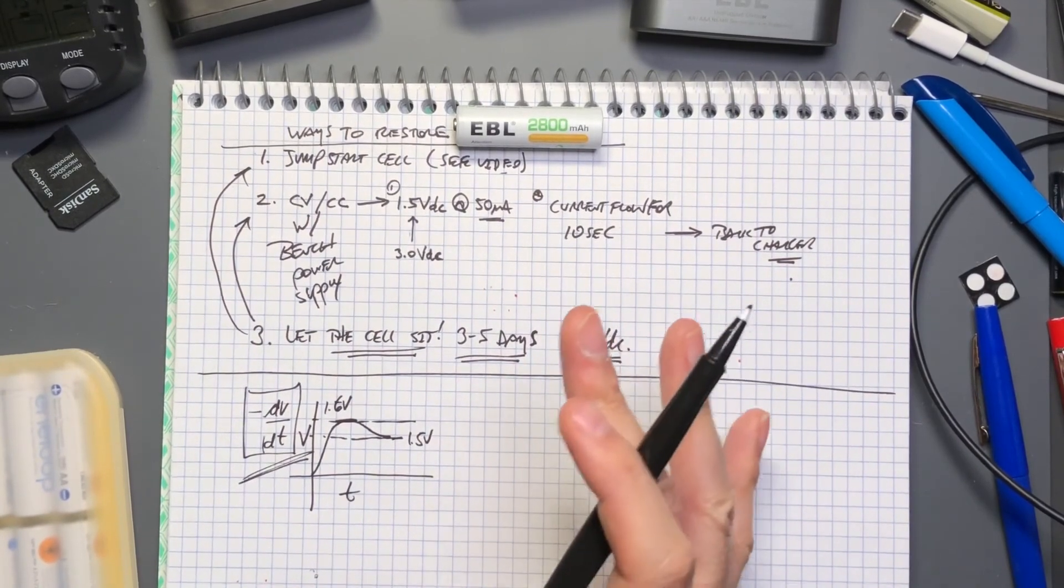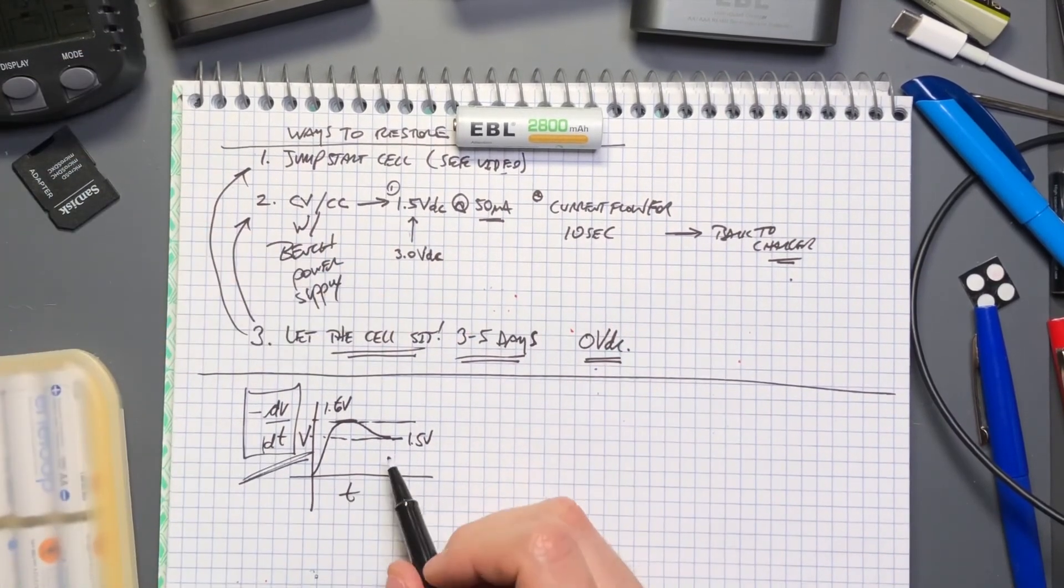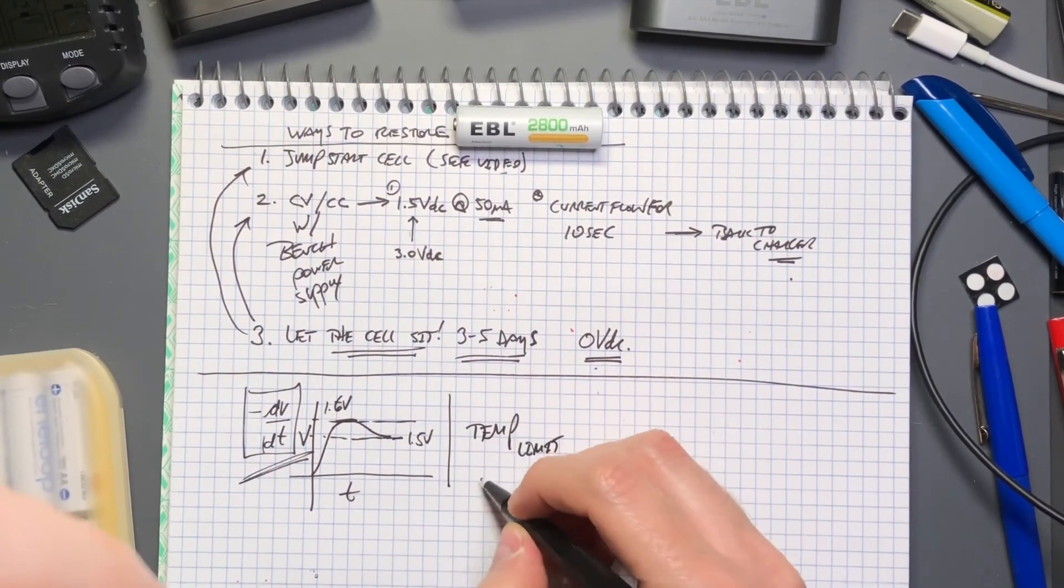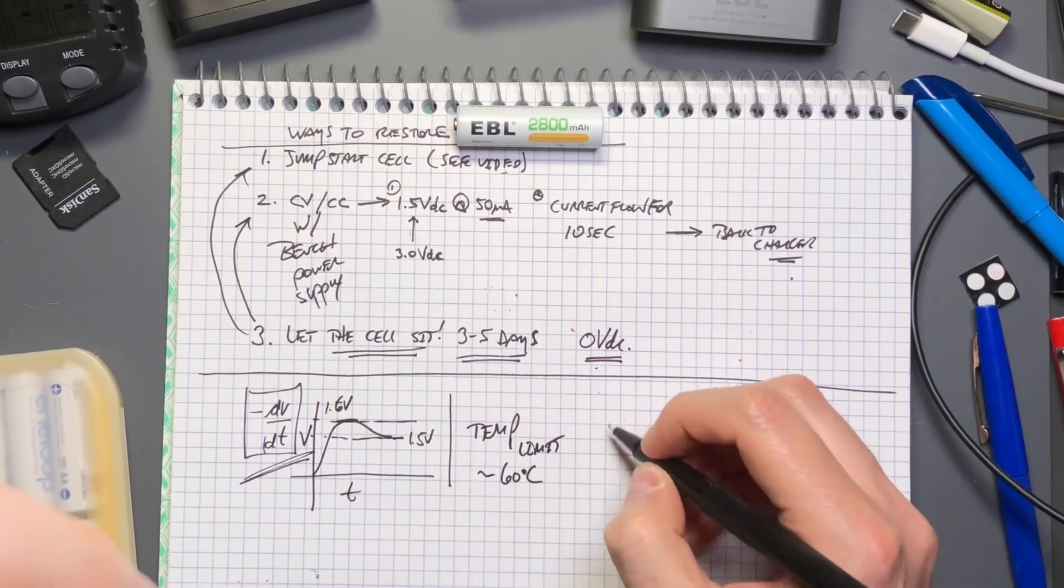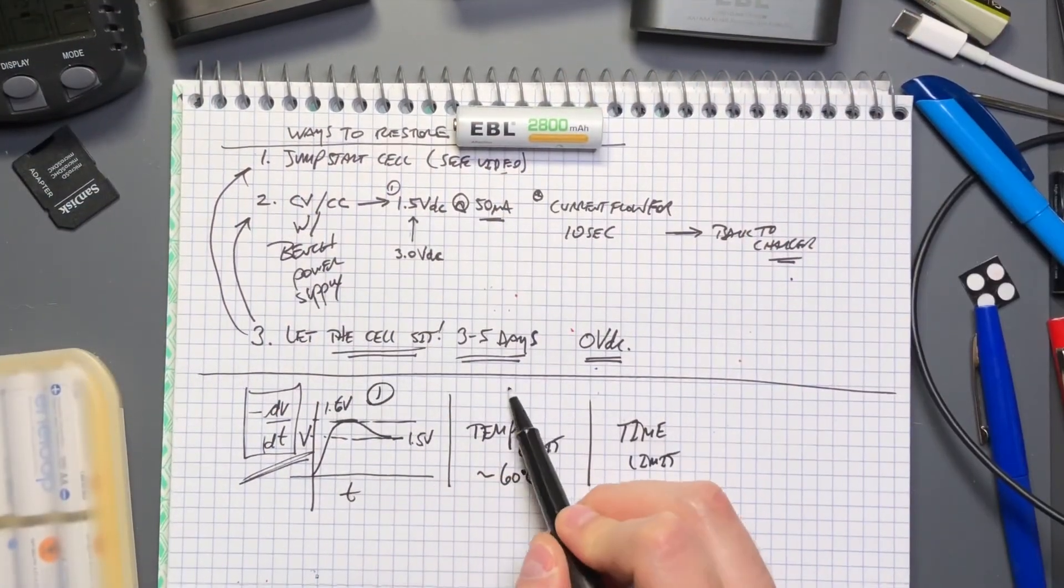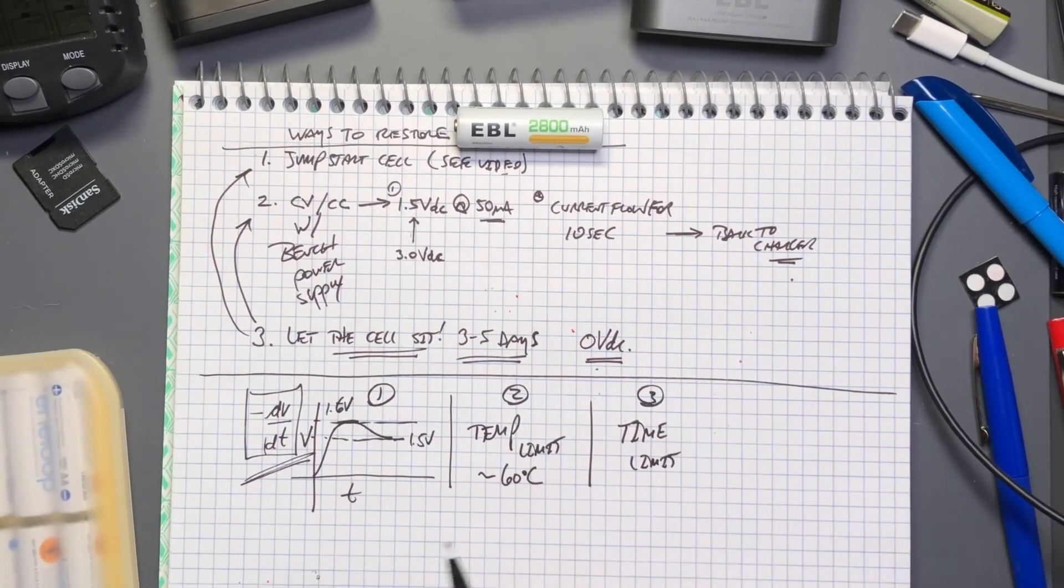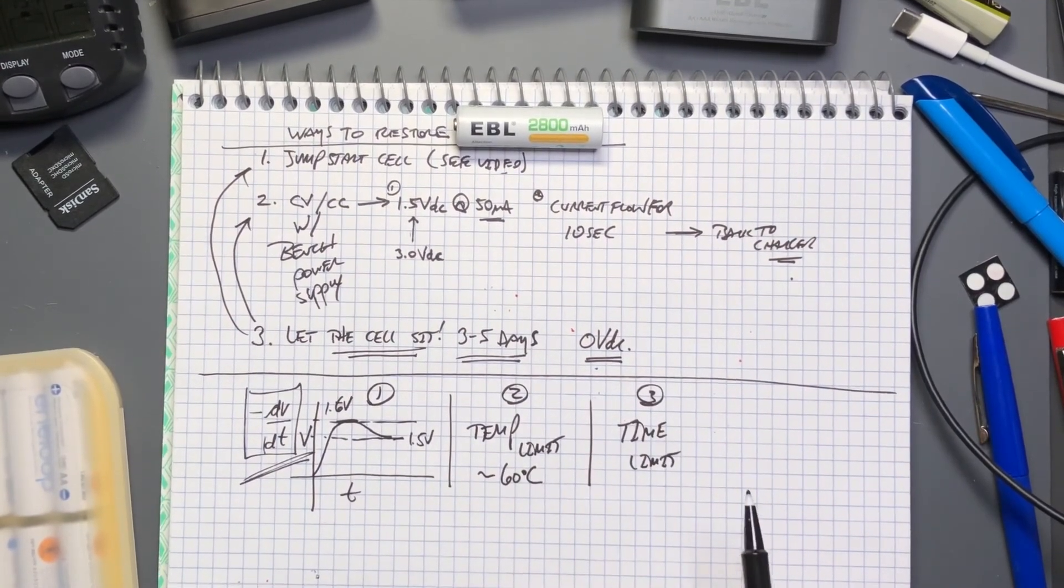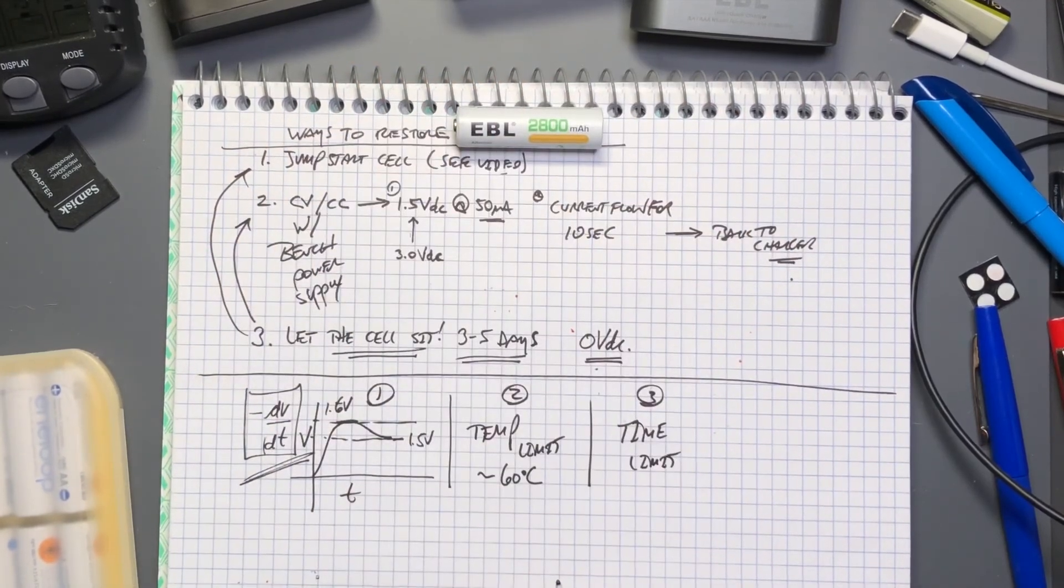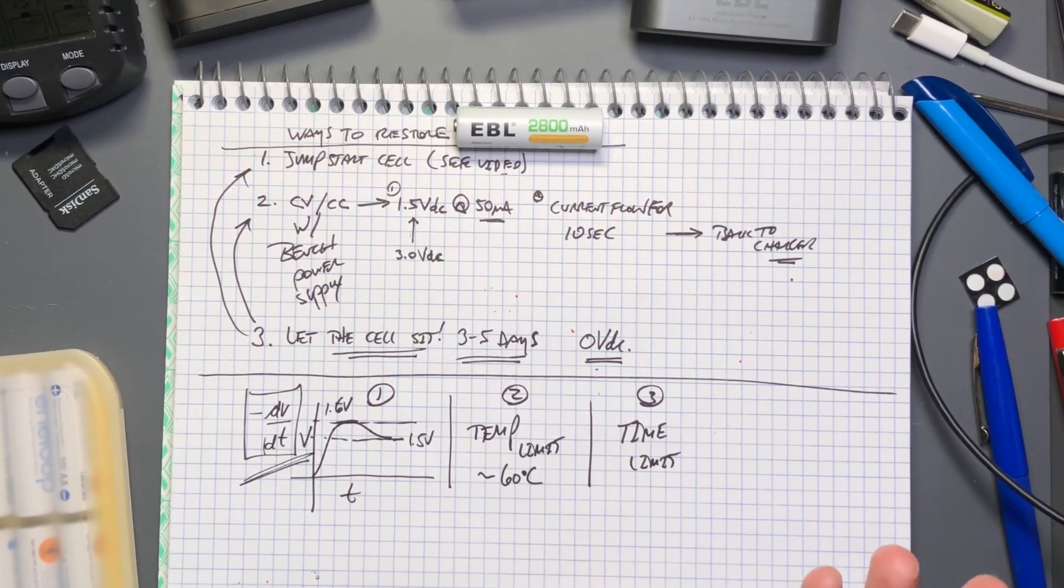Sometimes it's hard for the charger to detect that because of a variety of different conditions. A secondary measure for a lot of these chargers is temperature, generally 60 degrees Celsius, and then the third thing is time. You need a charger that has all these three things in it if you're going to be playing around with trying to restore cells that have just been over-discharged.